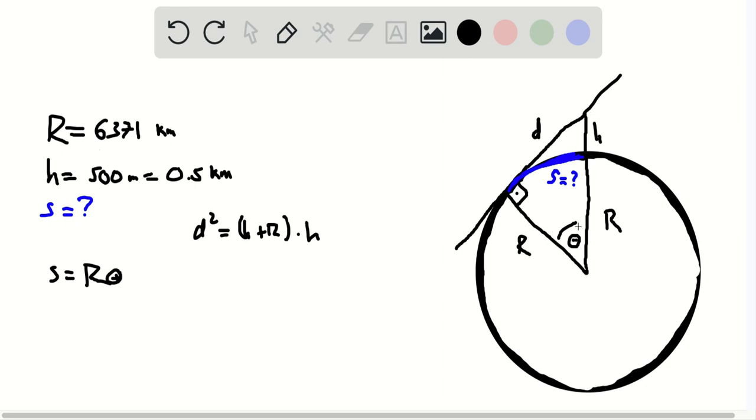But then how do you find this angle? Well, because of this tangential nature of the line to the horizon, you know that the triangle of r plus h and r and d is going to be a right angle triangle.